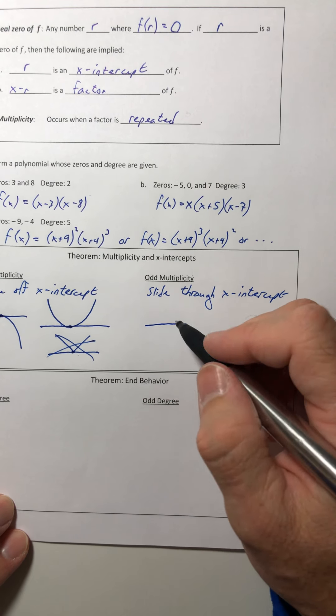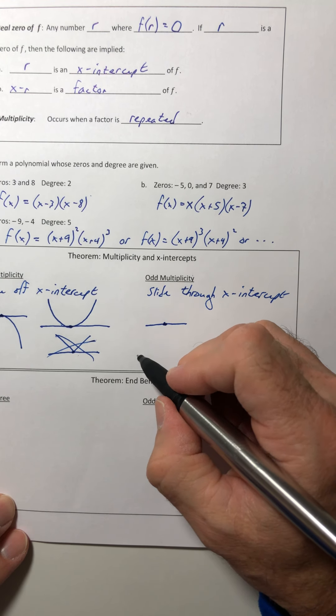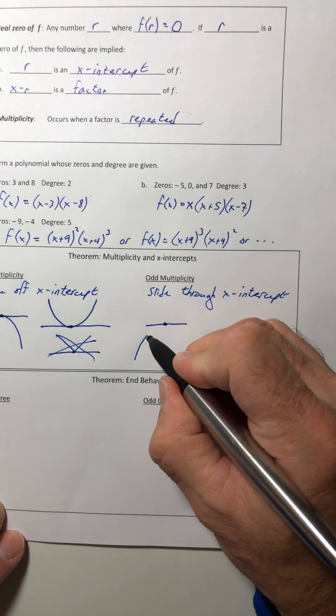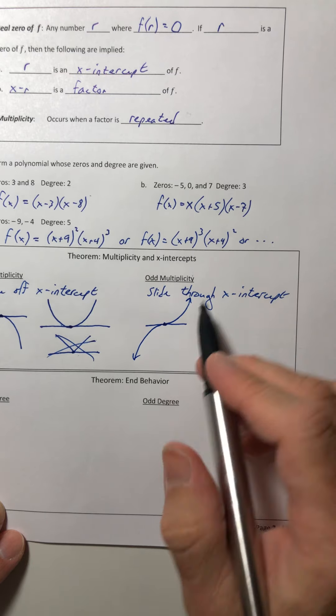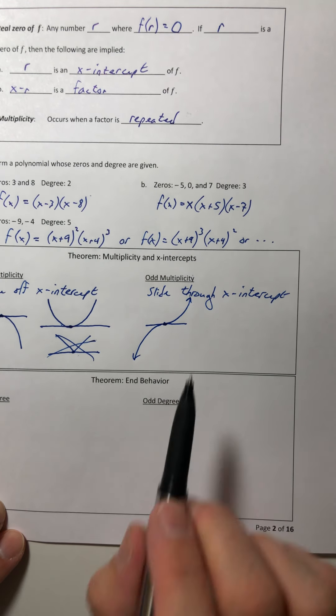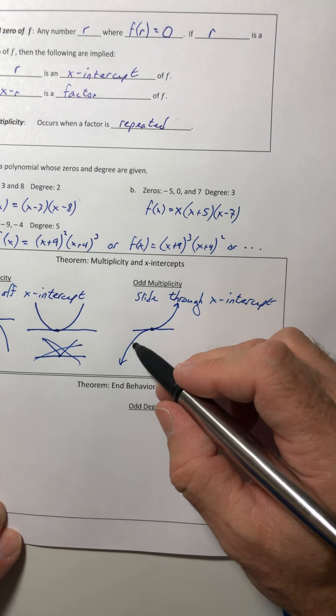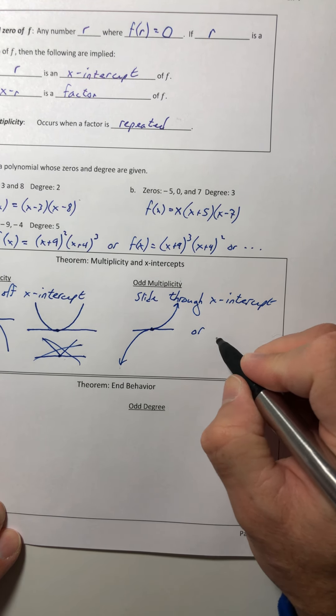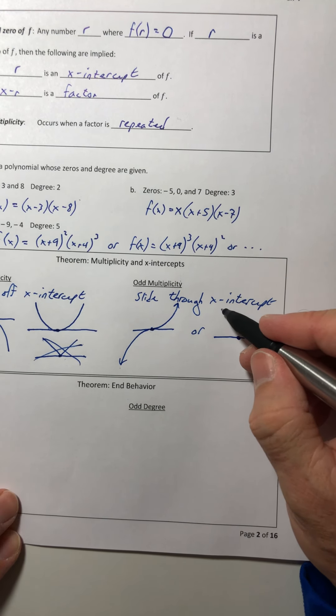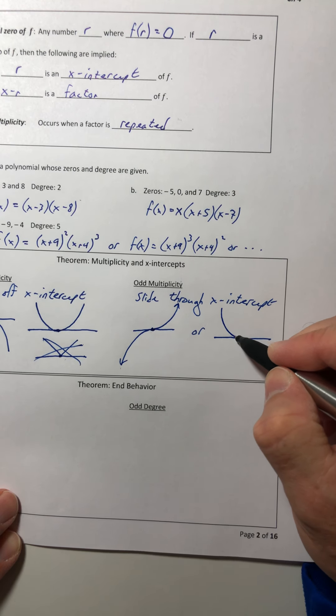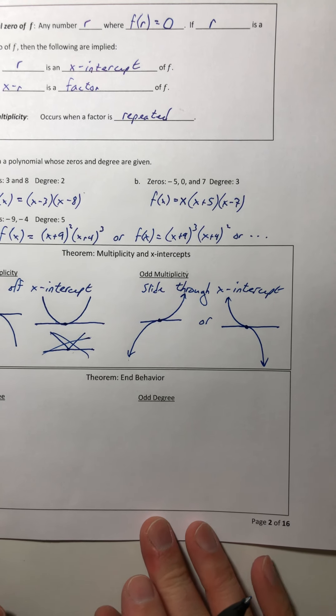And again, it just kind of depends on the direction that it's coming from. So let's say here's your intercept. And if you're coming in from the bottom, it's going to slide just like that. So it's almost like the graph kind of goes horizontal for a split second and then it curves around the other way. So it's going to, it can come in like this, or if you're coming from the top, it'll come in like that.